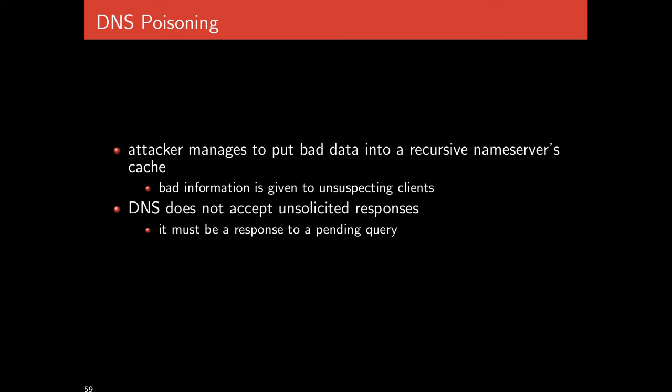That's the end of the description of how DNS works. Now let's talk about how DNS can be attacked and the damage that can cause. The main attack is called DNS poisoning, and the idea is that bad information is put into a cache. If you get bad data into a recursive name service cache, that data gets given to unsuspecting clients. If my name server is requesting the IP address for google.com and it's lied to and caches it, everyone who asks is going to be lied to as well.